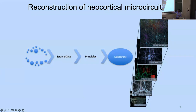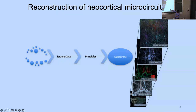One of the ways forward is to try and build a framework where we start from sparse data at the level of ion channels or neuron morphologies, neuronal physiology, their connectivity and network activity, identify certain rules and principles of organization in these multi-scale sparse data sets, and use these rules and principles to constrain algorithms that would enable us to build computational models of these building blocks of microcircuits across different levels.